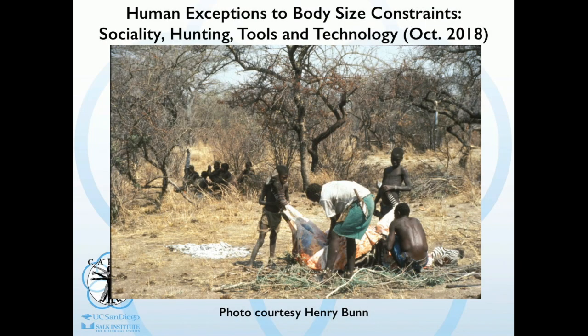How did we get around that constraint? What we did is develop hunting — what you're seeing here is a zebra. These are the Hadza of Tanzania, whom I was fortunate to work with for a couple of years. In the background you have sociality — the women and some of the younger people. You also have the development of tools and technology. Putting that all together — the man with the tools and technology, the sociality — that is absolutely required. We came from a different kind of locomotor background, and I think part of the reason we are what we are is because of the way we ended up coming down from the trees.